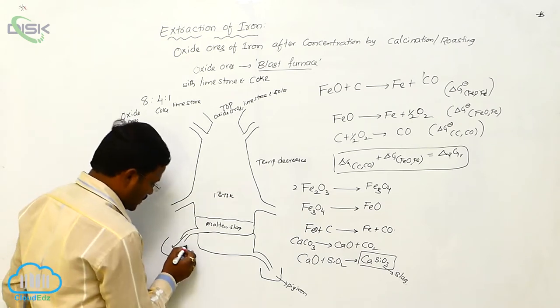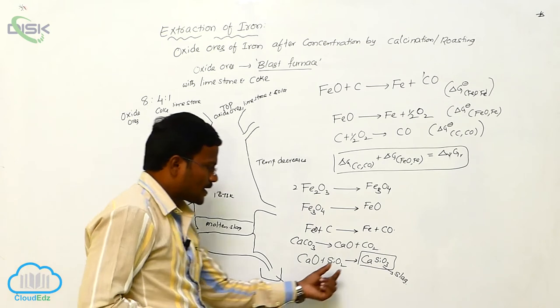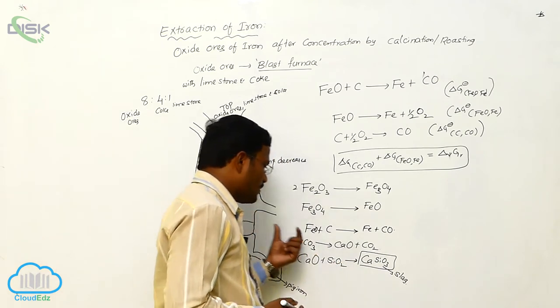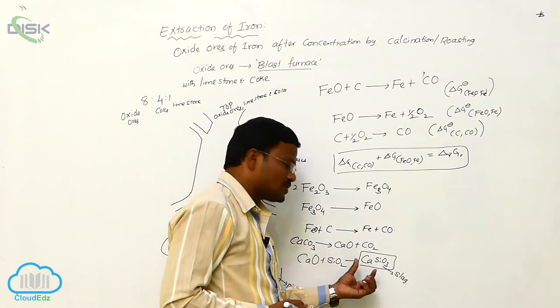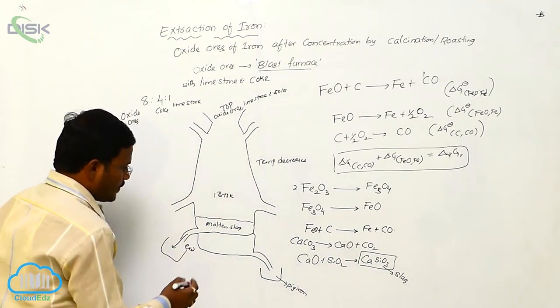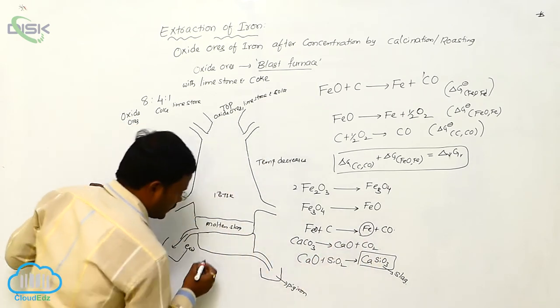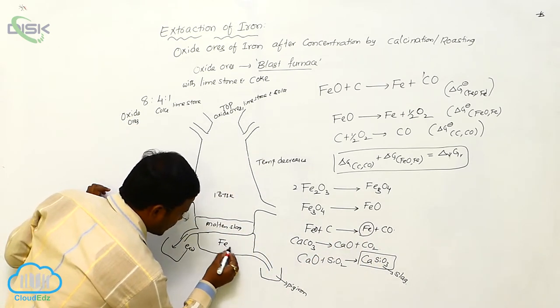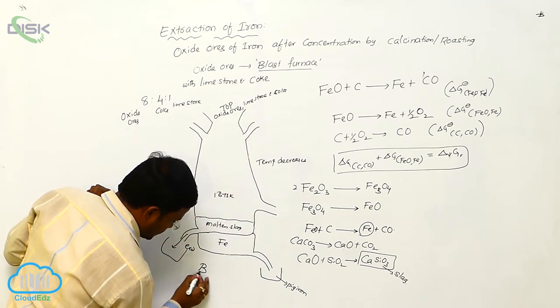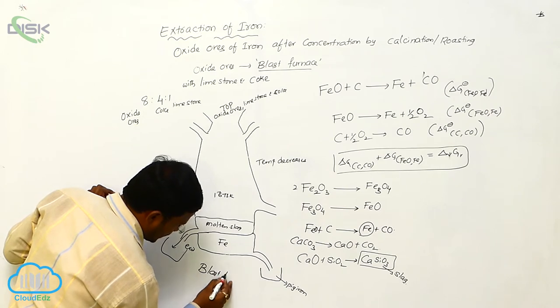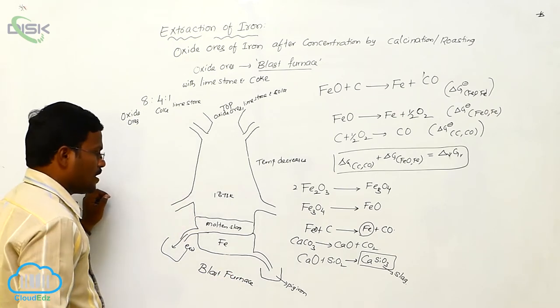From this exit area, we can collect molten slag. The calcium oxide, which may be present with impurity, reacts with silica to produce calcium silicate as slag collected here. Whereas after isolation, the pure iron will be collected at bottom side of the blast furnace.